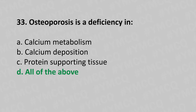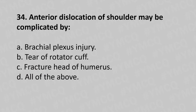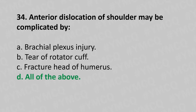Moving to our 34th question: anterior dislocation of the shoulder may be complicated by option A brachial plexus injury, option B tear of the rotator cuff, option C fracture of the head of the humerus, option D all of the above. The answer is option D all of the above.